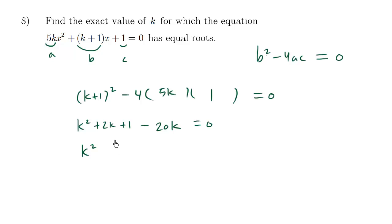So we have k squared, positive 2k minus 20k makes for negative 18k plus one equals zero. We can't factor this so we can use the quadratic formula to solve for k.